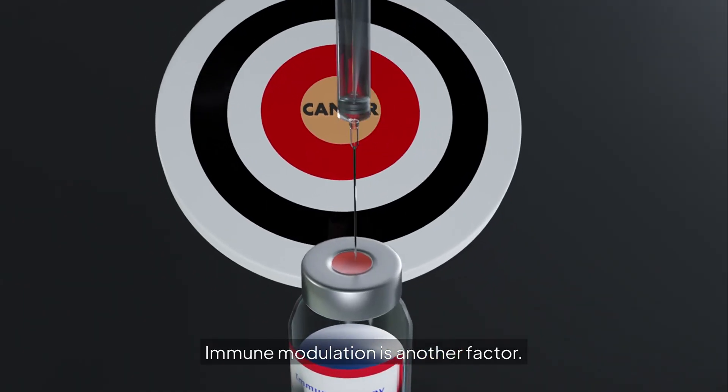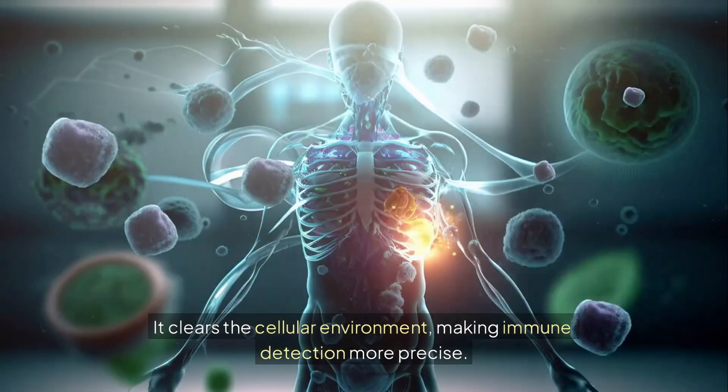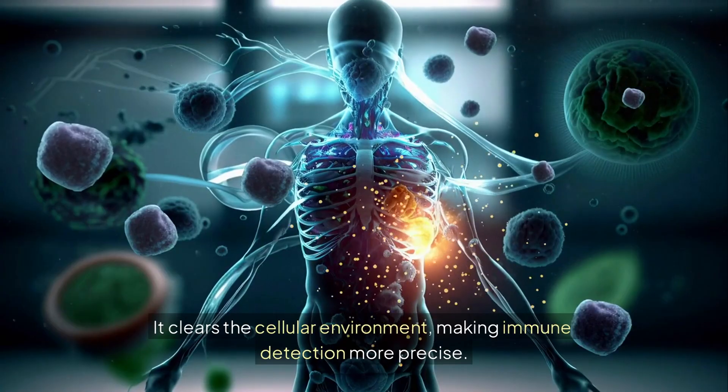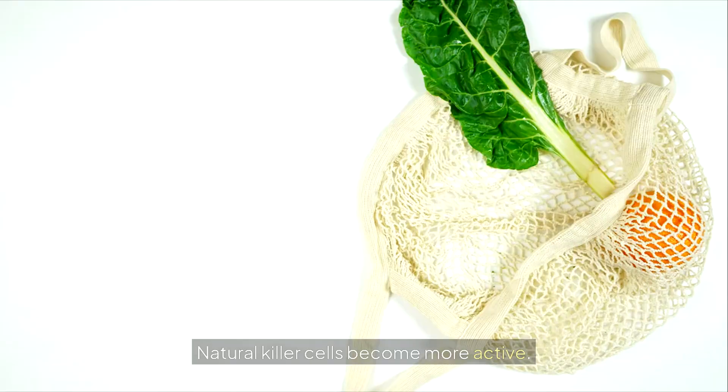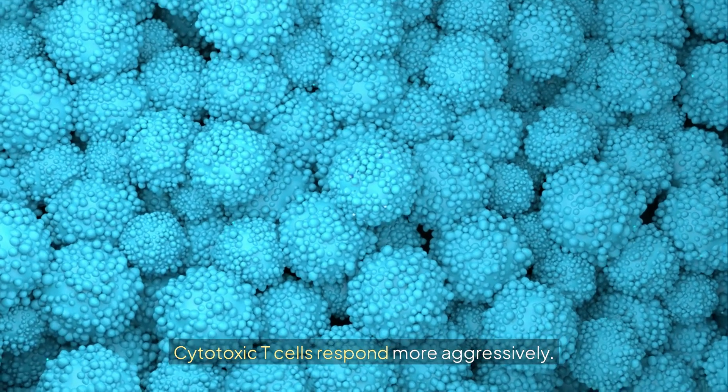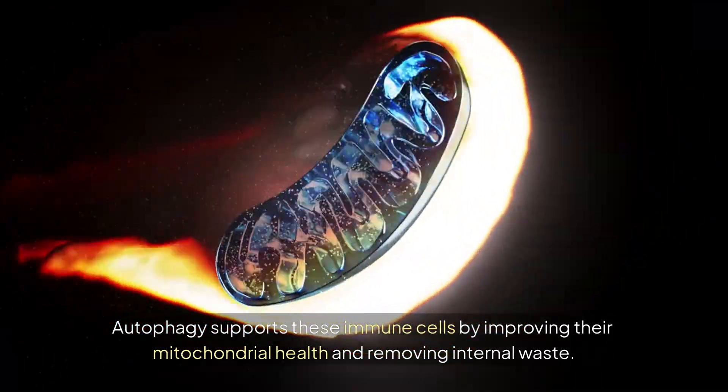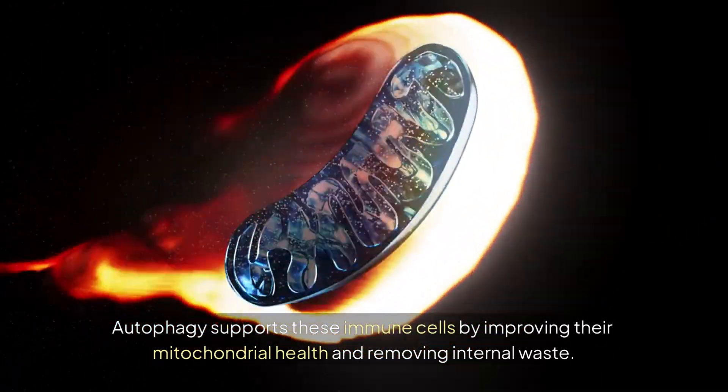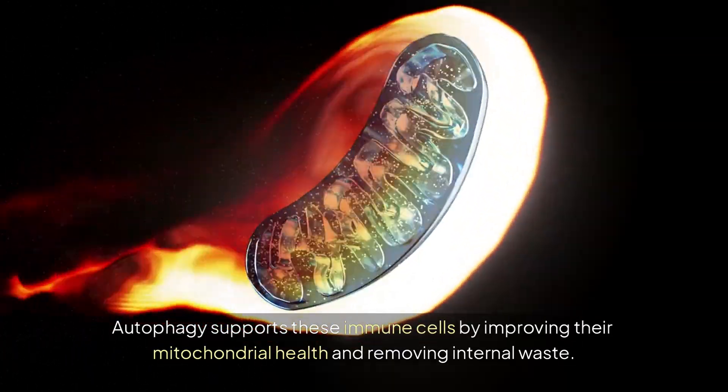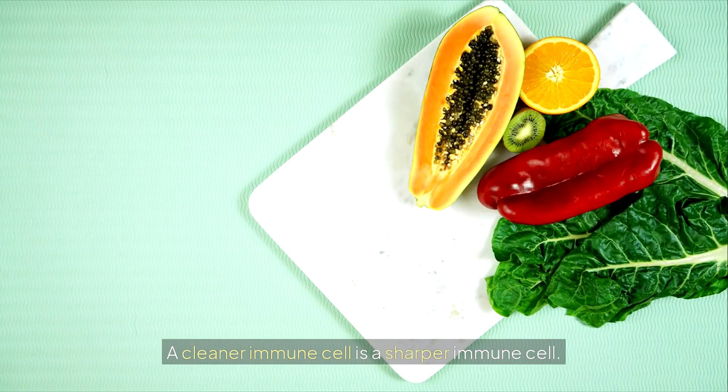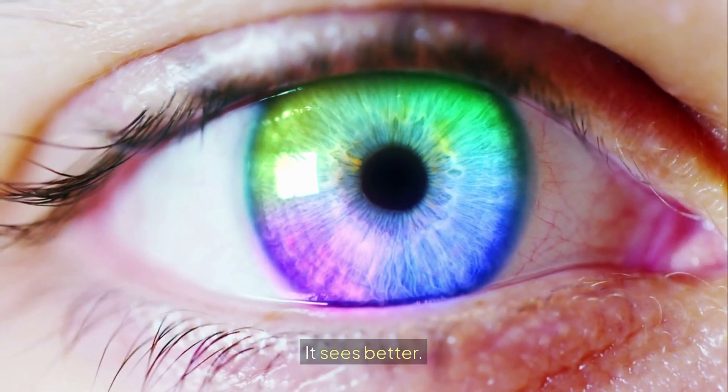Immune modulation is another factor. Fasting reduces chronic inflammation. It clears the cellular environment, making immune detection more precise. Natural killer cells become more active. Cytotoxic T cells respond more aggressively. Autophagy supports these immune cells by improving their mitochondrial health and removing internal waste. A cleaner immune cell is a sharper immune cell. It sees better. It acts faster.